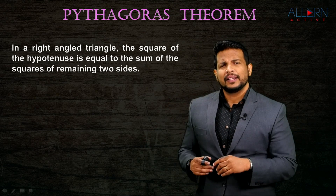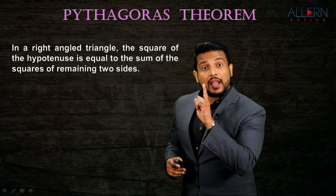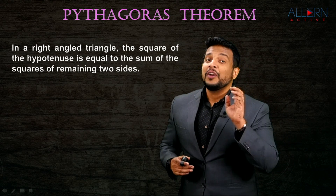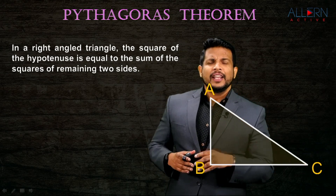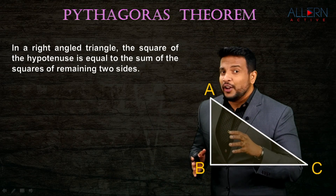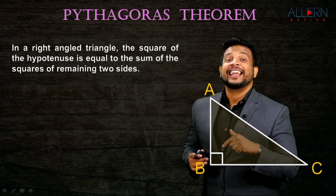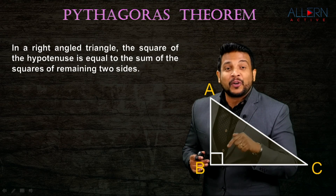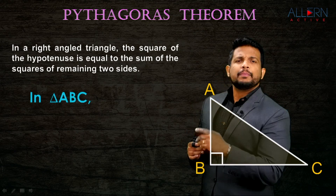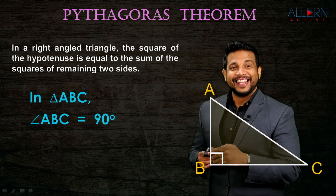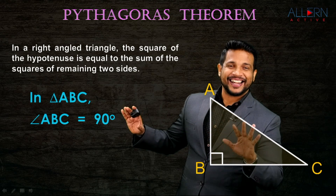What do we mean by this? It says 'in a right angle triangle' - that means first of all we need to have a right angle triangle. So let's consider a triangle. Is this triangle a right angle triangle? No. Now is it a right angle triangle? Yes, because one angle is 90 degrees. So we say: in triangle ABC, angle ABC is 90 degrees - that is how you write about a right angle triangle.